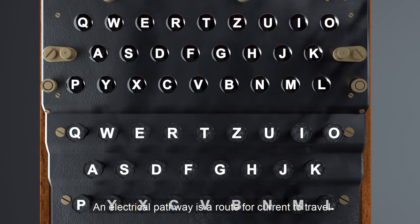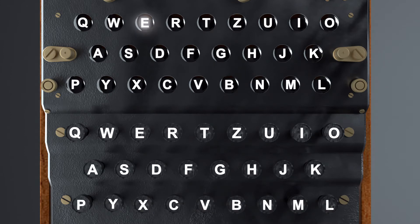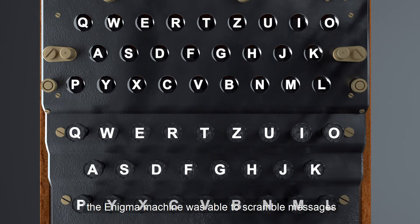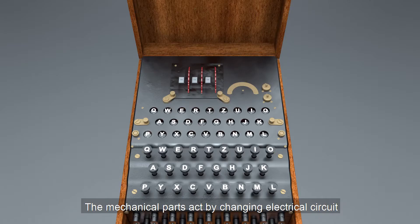An electrical pathway is a route for current to travel. By manipulating this phenomenon the Enigma machine was able to scramble messages. The mechanical parts act by changing electrical circuit.